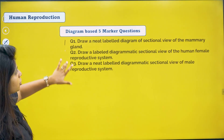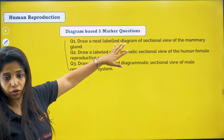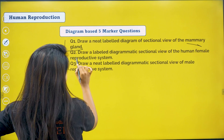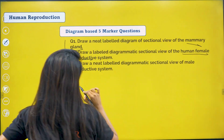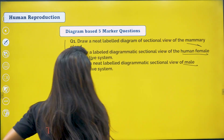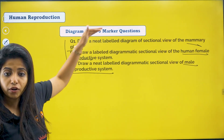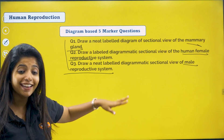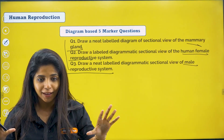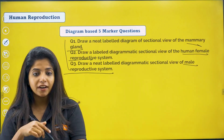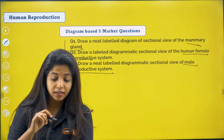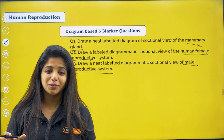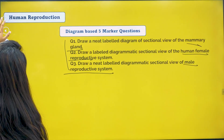Diagram-based five-marker questions: draw a neatly labelled diagram of the sectional view of the mammary gland, the human female reproductive system, and the male reproductive system. All of it you should be knowing — very, very important. See the diagram, take a copy, write things down, look at the labellings and try to label them yourself. When you try to label, you will find the missing pieces. That is the best way to learn.